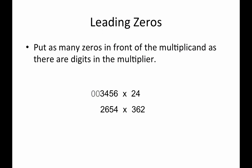We have 2654 times 362. The multiplier 362 is three digits, so we put three leading zeros in front of the 2654. Here our multiplier is 4132. It has four digits, so we put four leading zeros in front of the multiplicand.